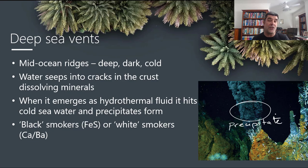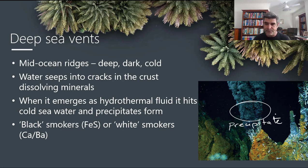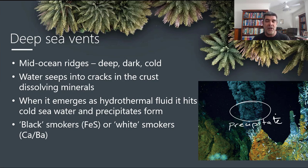Depending on the composition of the precipitates, we can have black smokers or white smokers. Black smokers tend to be dominated by iron sulfides, whereas white smokers tend to be more calcium, barium, silicate — that type of thing. Either way, this puts a large amount of chemical matter into the region around these deep sea vents, and that has been associated with a certain type of life.